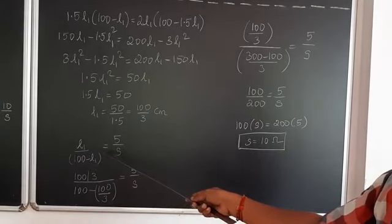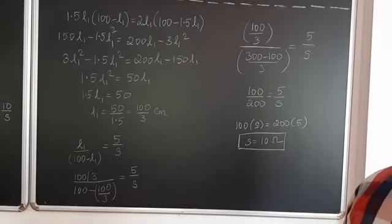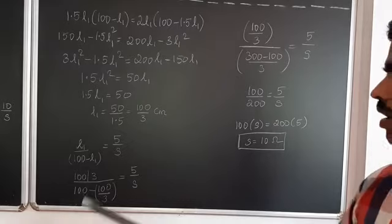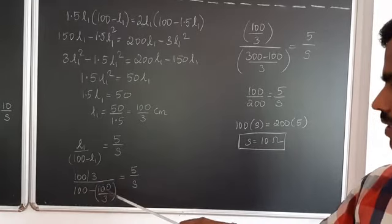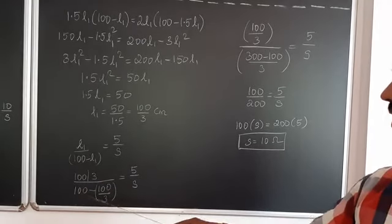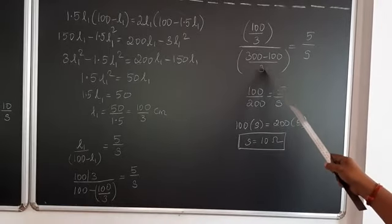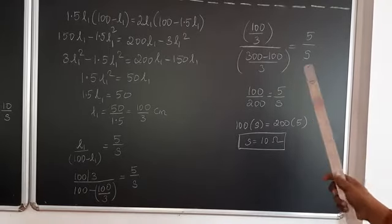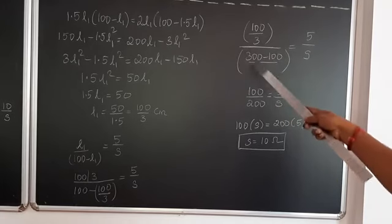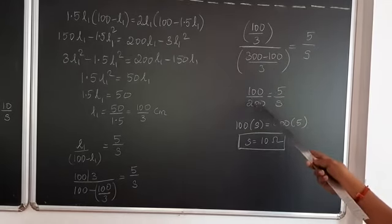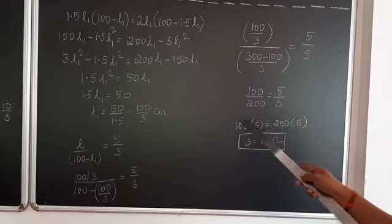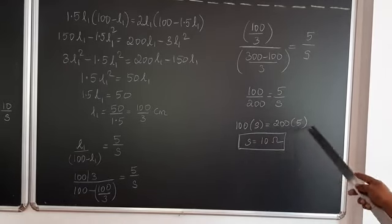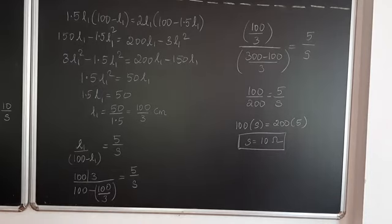Using the first condition: L1 / (100 − L1) = 5/S. Substituting L1 = 100/3: (100/3) / (100 − 100/3) = (100/3) / (200/3) = 100/200 = 1/2. So 1/2 = 5/S, giving S = 10 ohm.